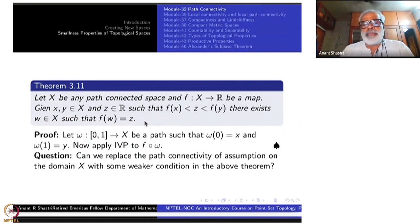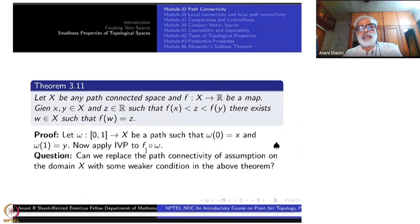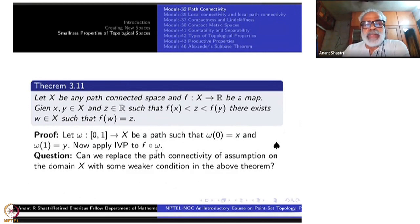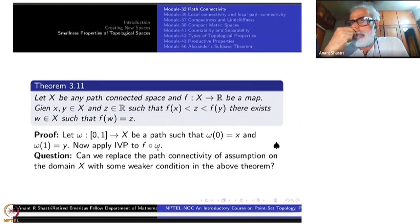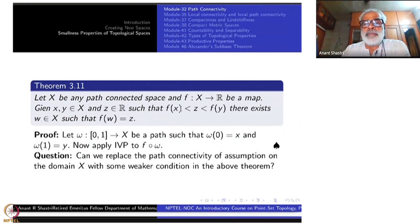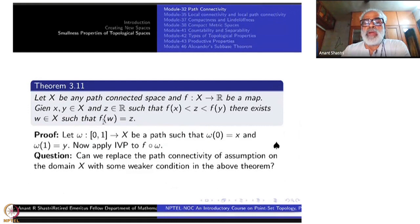How does one prove it? One-line proof. You have two points x and y inside X. Join them by a path omega from [0,1] to X such that omega(0) = x and omega(1) = y. Now apply the Intermediate Value Theorem to F composite omega. Omega is continuous, F is continuous, so the composite is continuous. It goes from [0,1] to R, so IVT is applicable. You get a t between 0 and 1 such that F(omega(t)) is between F(x) and F(y). This omega(t) is precisely the point w. Put w = omega(t) and F(w) equals that value.